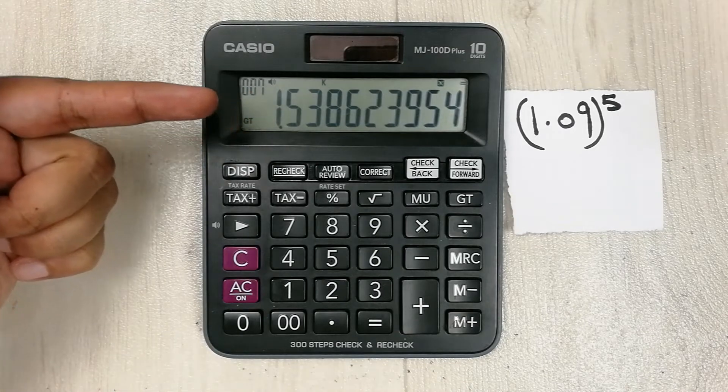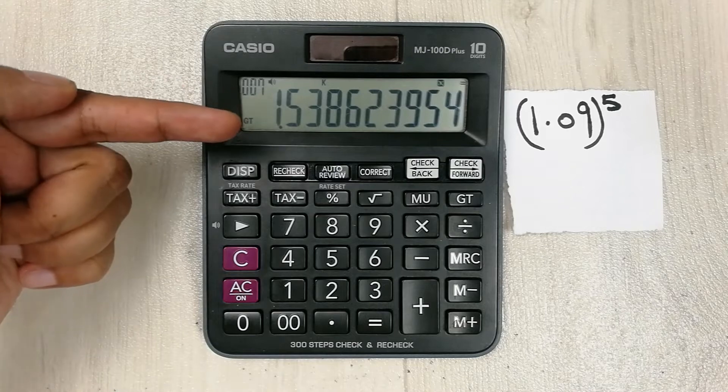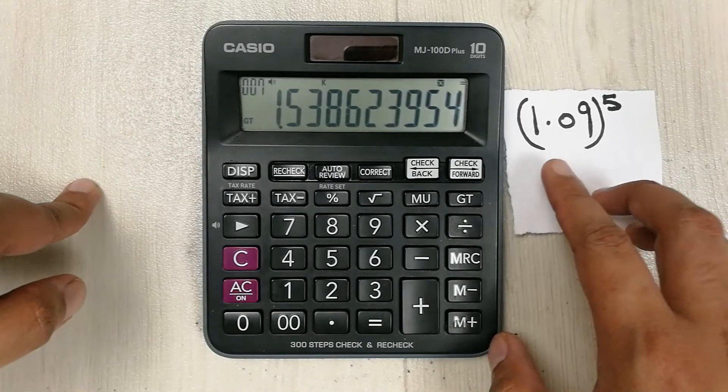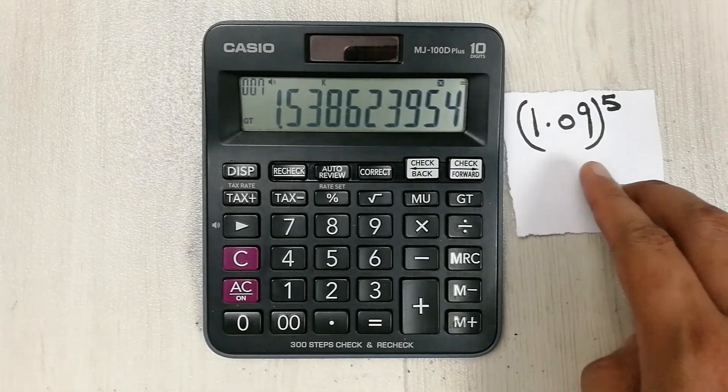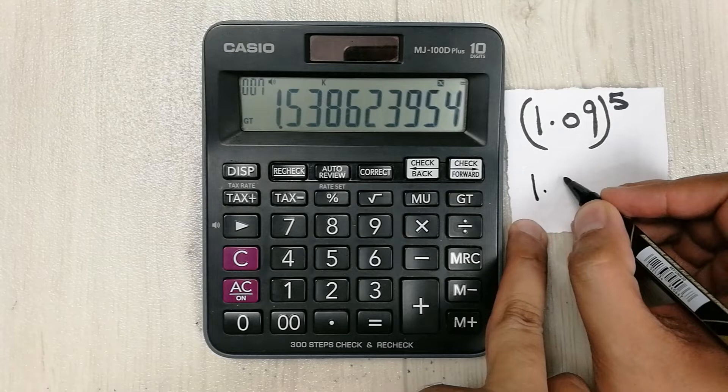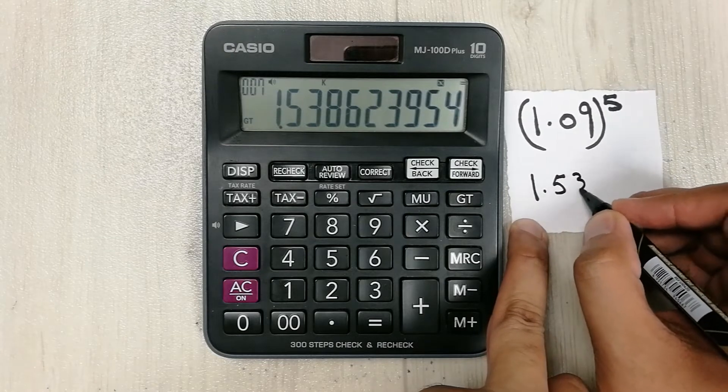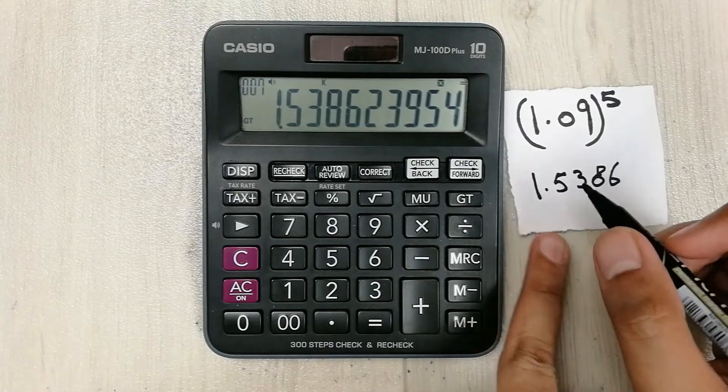So 1.5386 is the answer for 1.09 raised to the power 5. And when we want to write it on the paper, we have to write it like this: 1.5386.